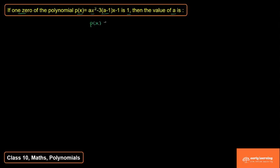Now, P(x) is given as Ax² - 3(A-1)x - 1.